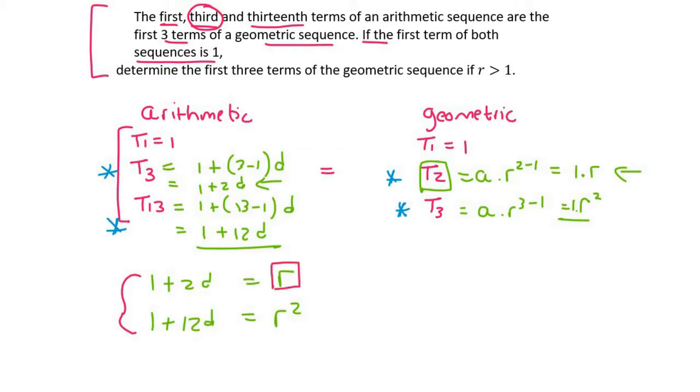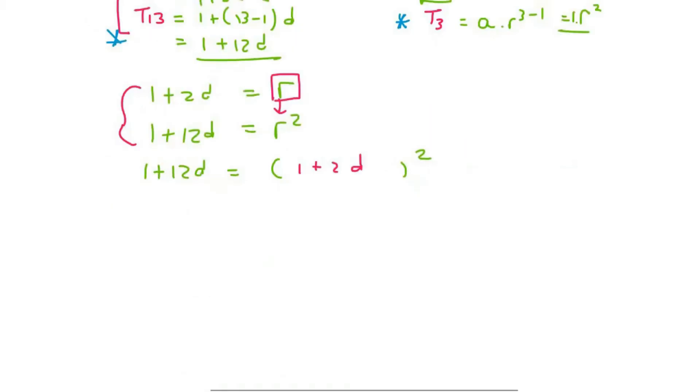So here we already have r alone. r is equal to 1 plus 2d. So I'm going to plug that into this equation. So we're going to end up with 1 plus 12d equals, and then here we can replace this with 1 plus 2d squared.